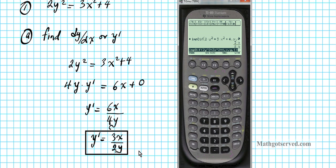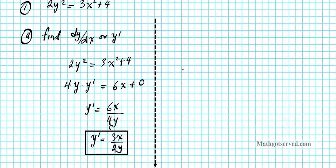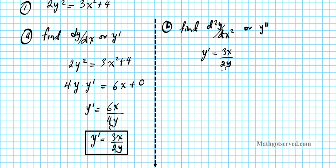Now let's move to part B — finding d²y/dx², or y double prime. We start with the solution from part A: y prime equals 3x over 2y. To find the second derivative we differentiate both sides, giving y double prime equals the derivative of 3x over 2y. We have a quotient of functions, so we need to use the quotient rule.